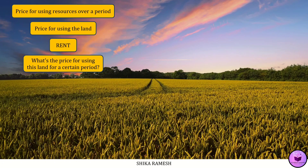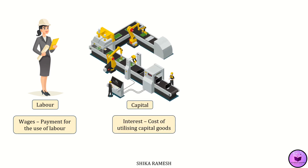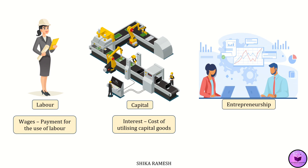Rent is the payment made for utilizing the land. Similarly, when we talk about the price of labor, we are looking at wages — the payment for the use of labor. For capital, it's interest — the cost for utilizing capital goods. And for entrepreneurship, it's profits — the return for the use of entrepreneurial skills in organizing and managing production. So when economists discuss factor pricing, they are not evaluating the inherent value of these factors, but determining the prices for the services or use of these factors over time.